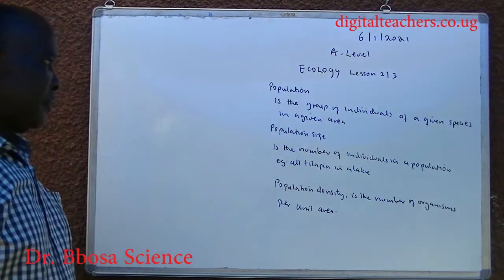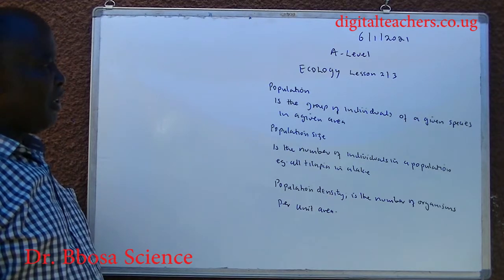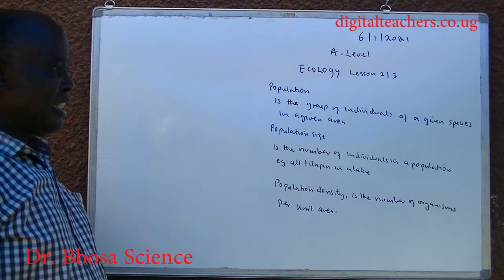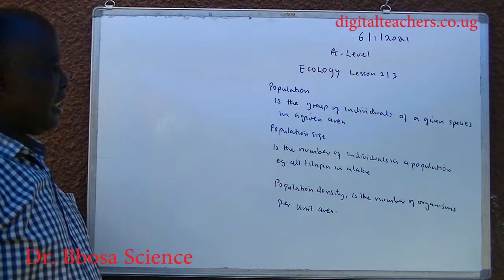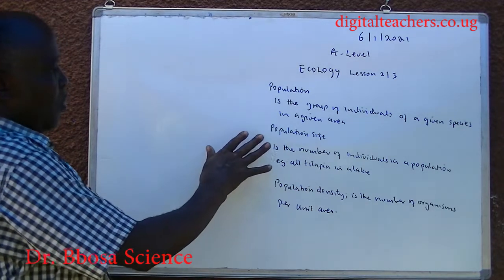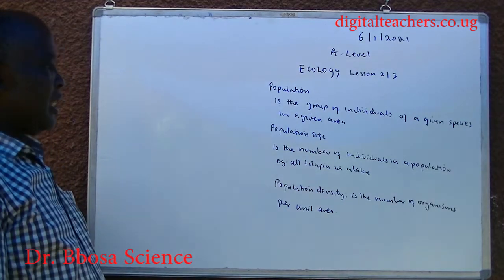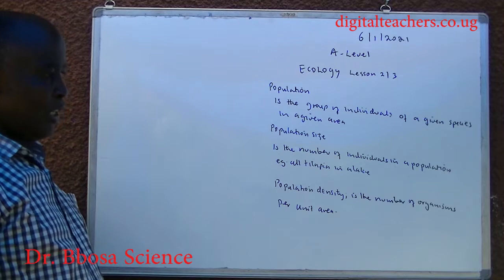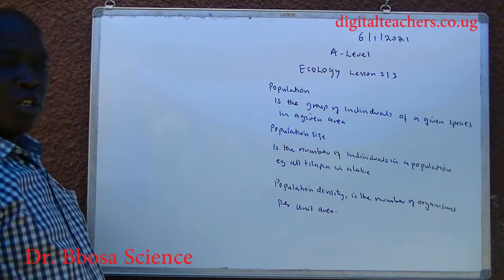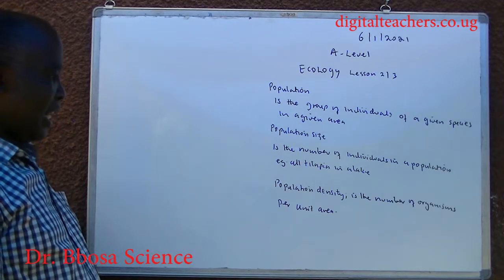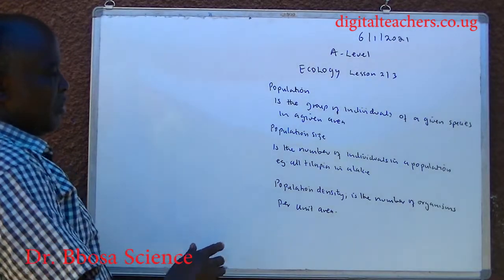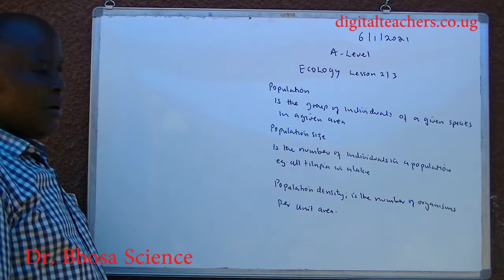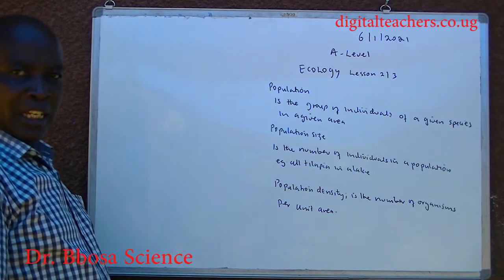Population is a group of individuals of a given species in a given area. Population size is the number of individuals in a population — for example, tilapia in a lake. Population density is the number of organisms per unit area.